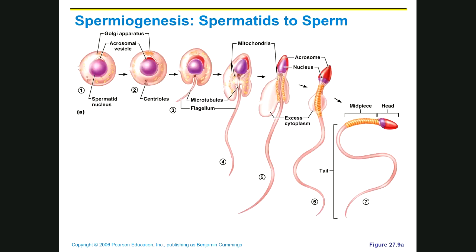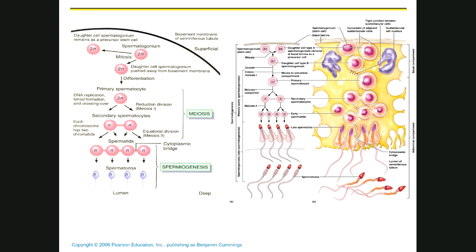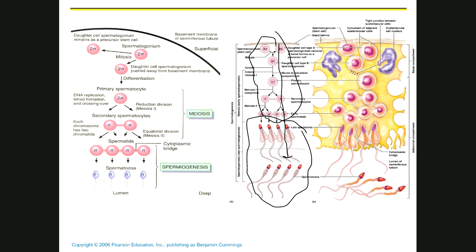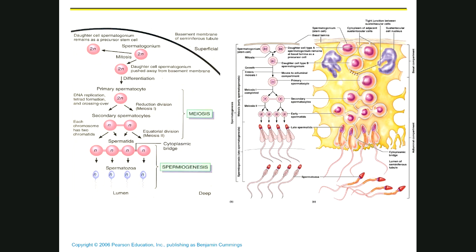Let's go back and look at it again. This part is meiosis and this part is spermiogenesis, and then we get these sperm. All of these cells—the sperm included—are basically very, very helpless. They can't feed themselves, nourish themselves, or move. They can't do anything for themselves, so they need helpers.